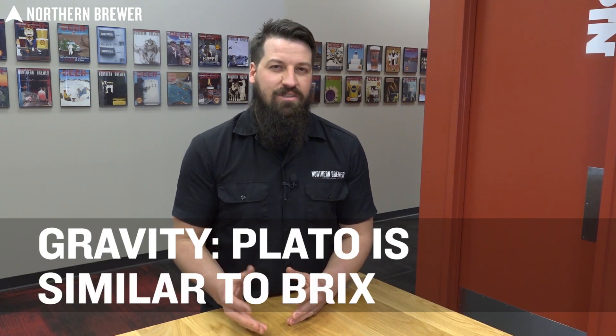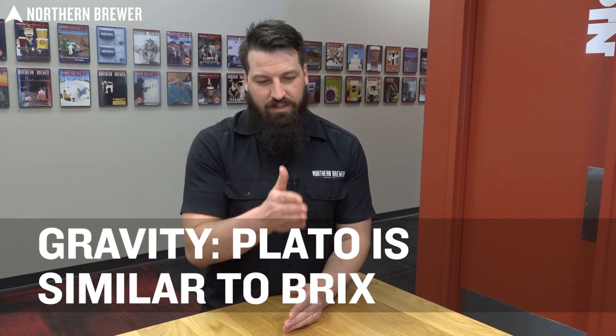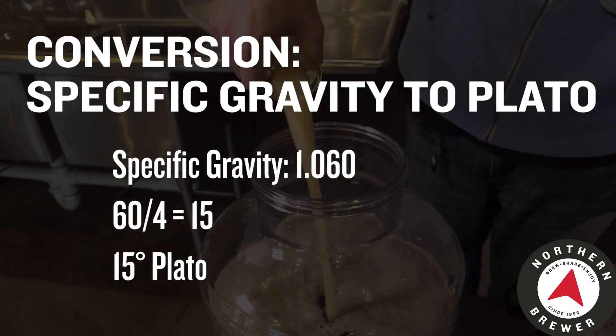If you have a refractometer, you'll have two scales: one for specific gravity and one for Brix. Most professional and commercial breweries use Plato when measuring gravity instead of specific gravity. There's an easy conversion: take the numbers to the right of the decimal of your specific gravity and divide by four — that gives you degrees Plato. For example, at 1.060, take 60 divided by 4, which equals 15 degrees Plato. At 1.040, take 40 divided by 4, which equals 10 degrees Plato.